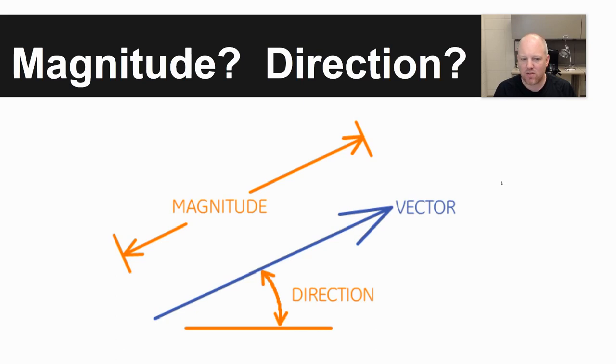An example of a vector that we would have talked about or will talk about is velocity. It has a quantity, 35 miles per hour, and it has a direction north, and so that's the difference between speed and velocity. Velocity is a vector, speed is a scalar.